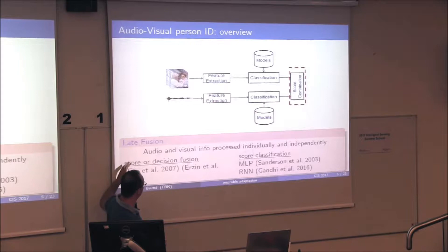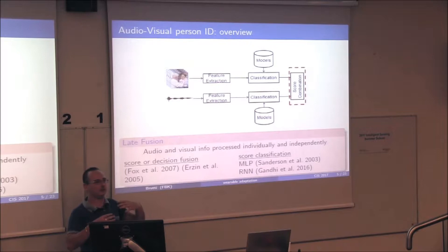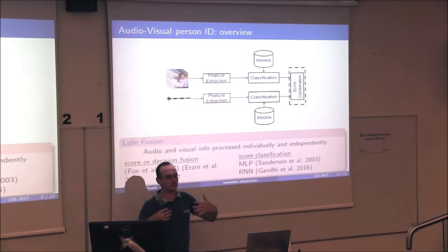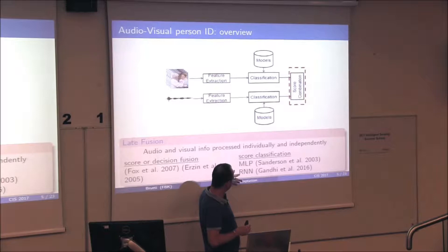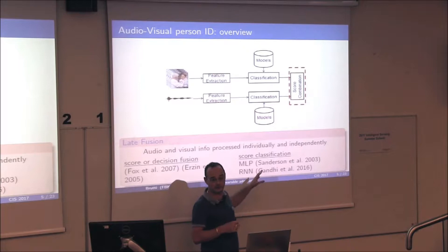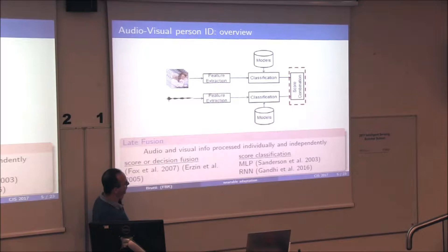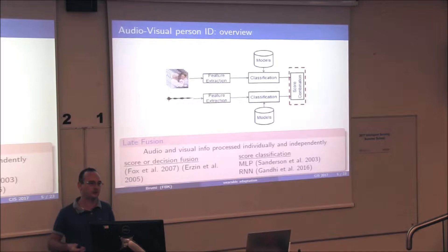There are numerous solutions in the literature for combining scores. Methods range from empirical fusion — taking the average or product of scores — to a fuller classification stage that uses scores as features for further classification. There are solutions based on recurrent neural networks for very advanced combination strategies. Of course, the problem is that you need some material to train the score classification part, which may not always be available.